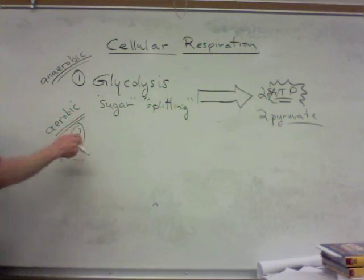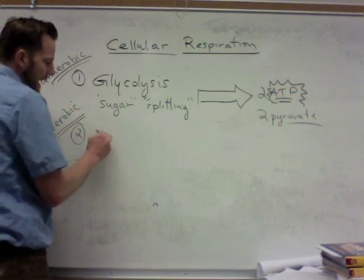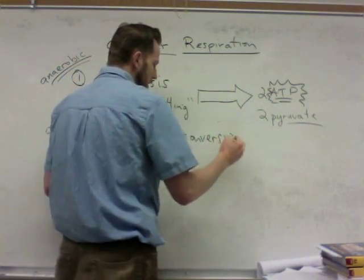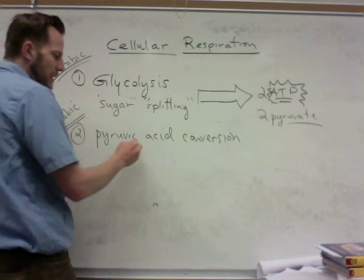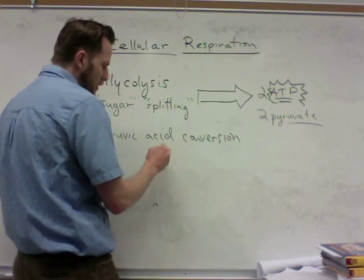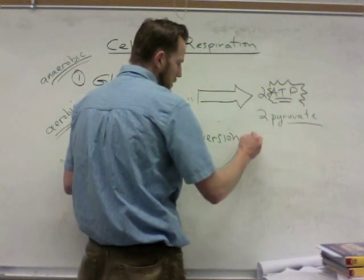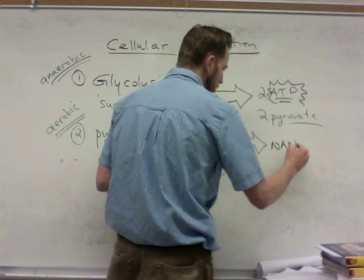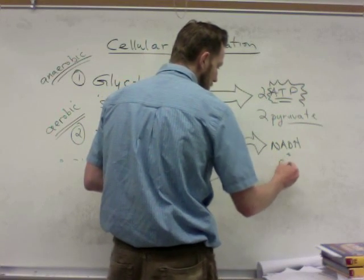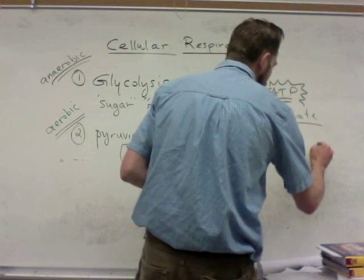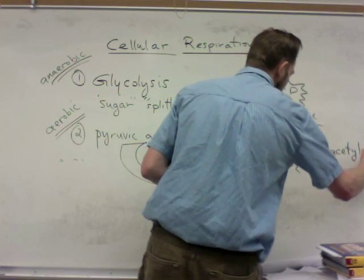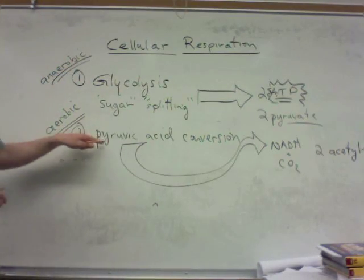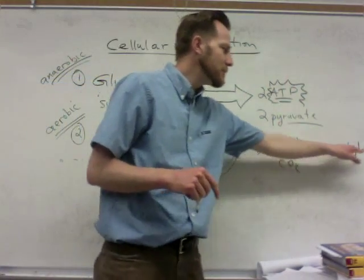The second step is kind of an intermediate stage called the pyruvic acid conversion, sometimes called the intermediate reactions. No ATP is made during this step, but a little bit of NADH is made. The pyruvic acid conversion makes NADH, some CO2, and two acetyl-CoA molecules. Acetyl-CoA is the starting point of the next cycle.